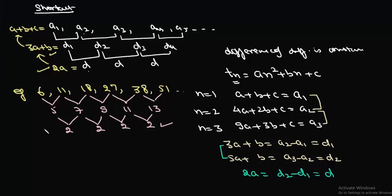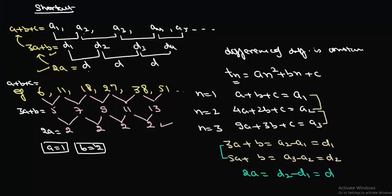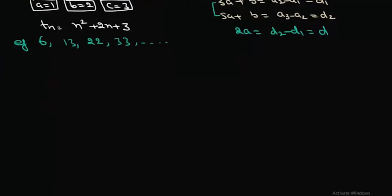Using the shortcut: 2a = 2, so a = 1. Then 3a + b = 5 gives b = 2. Then a + b + c = 6 gives c = 3. So the nth term of the sequence is n² + 2n + 3.